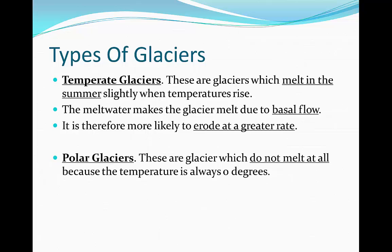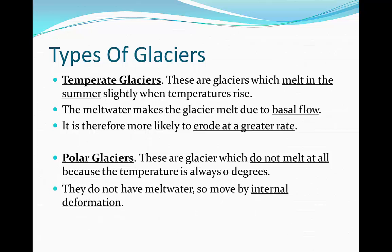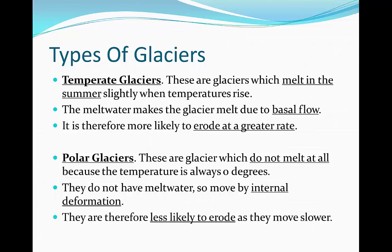Polar glaciers are the second type. These are glaciers which do not melt at all because the temperature is always at or below zero degrees. They do not have melt water, so they move by internal deformation. What this means is that the ice crystals orientate themselves in the direction of flow and slide past each other. They are therefore less likely to erode and they move at a slower rate.